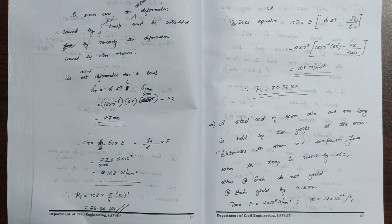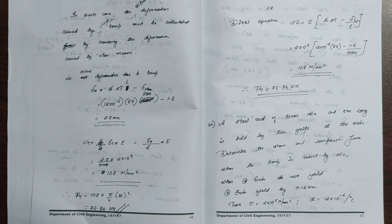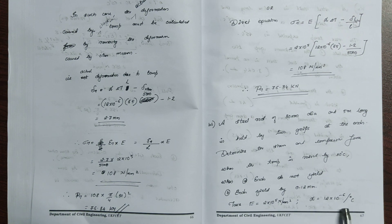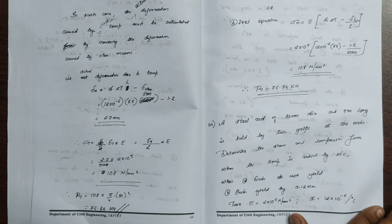A steel rod of 30 mm diameter and 5 metre long is held by two grips at the ends. Determine the stress and compressive force when the temperature is raised by 30 degree Celsius — first when the ends do not yield, and second when the ends yield by 0.12 mm. E is equal to 2 into 10 power 5 Newton per mm square, and alpha equal to 12 into 10 power minus 6 per degree Celsius.